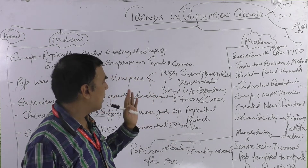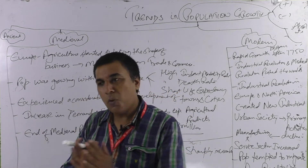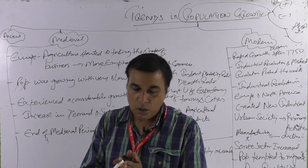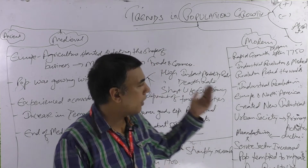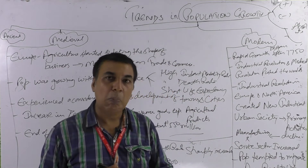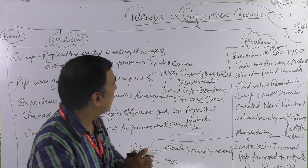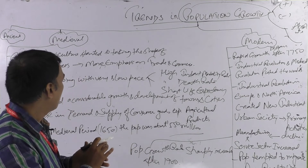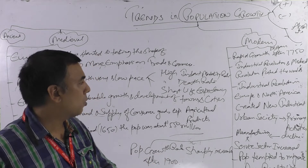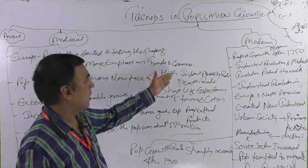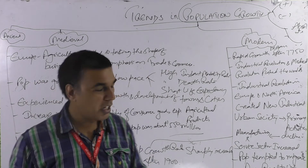In the medieval period, we can say the population was transforming from the primary or agriculture sector into manufacturing or service sector, but the ratio was very low. Because of that, the pace of population growth was very slow — due to high infant mortality rate, high death rate, and short life expectancy.